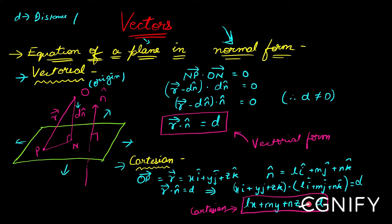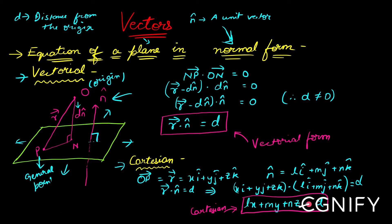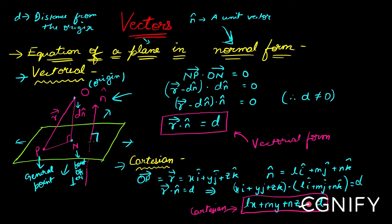Let's look at a few more terms in this diagram. n̂ (n-cap) is a unit vector which is perpendicular to the plane — the symbol 'cap' is used for a unit vector. P is a general point, a random point on the plane. N is the foot of the perpendicular from the origin onto the plane — when I drop a perpendicular from the origin to the plane, N is where it strikes.